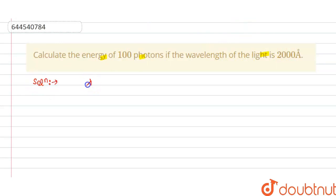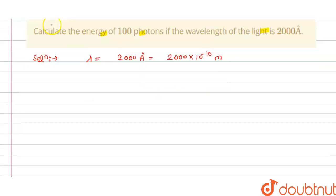we have the wavelength is 2000 angstrom. That is,